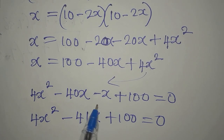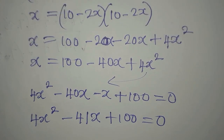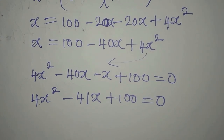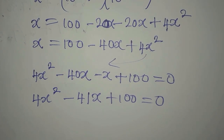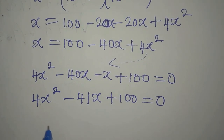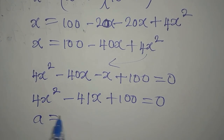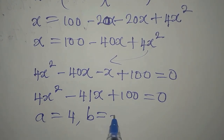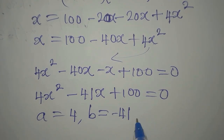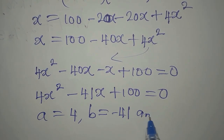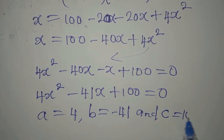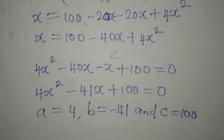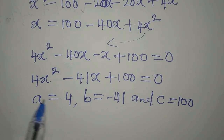We now have 4x squared minus 41x plus 100 equals zero, because minus 40x minus 1x is minus 41x. The formula we are going to use is the quadratic general formula. Here a equals 4, b equals minus 41, and c equals 100.